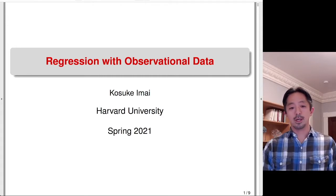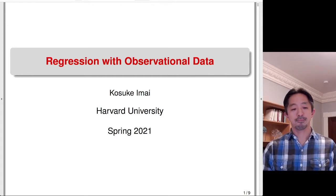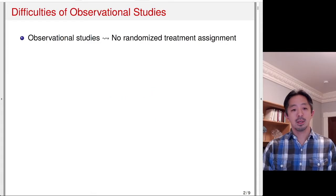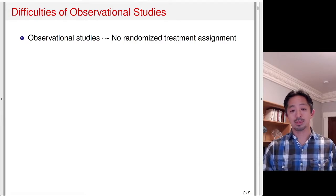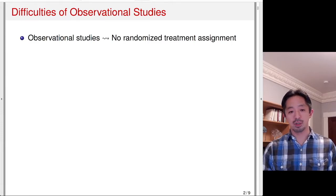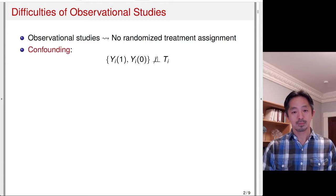In this lecture, we'll discuss regression models with observational data. Observational studies have no randomized treatment assignment. The units self-select themselves into the treatment group, so the researchers have no control over who received the treatment and who belongs to the control group. As a result, we have a confounding problem.